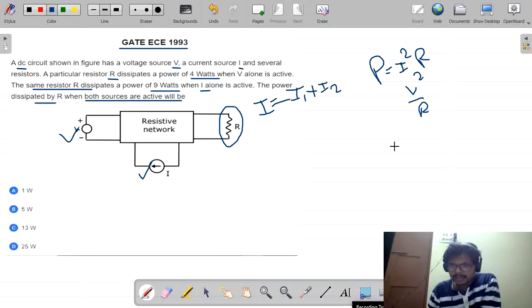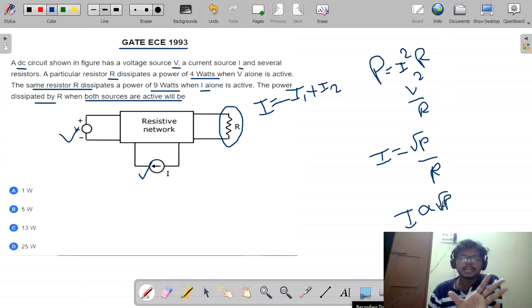From this what we can write? I equal to root P by R. So we can clearly mention that the current is proportional to root P, but not to P. If current is proportional to P, we can add it up. But it is not proportional, it is the root P.